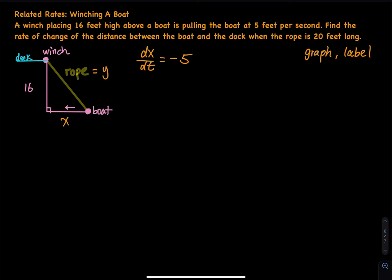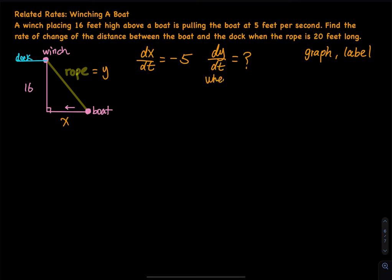Next, find the rate of change of the distance between the boat and the dock — that means dy/dt is unknown. When the rope is 20 feet long, so when y equals 20, you have to find dy/dt. The labeling is done.